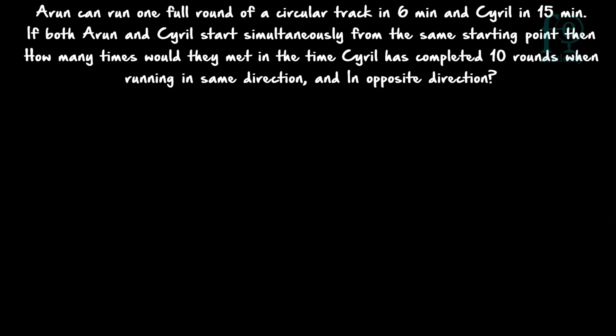The time taken by Arun to run a full round of the circular track is 6 minutes, and for Cyril the time taken is 15 minutes. They are starting simultaneously from the same starting point, and we need to find the number of meetings by the time Cyril has completed 10 rounds.